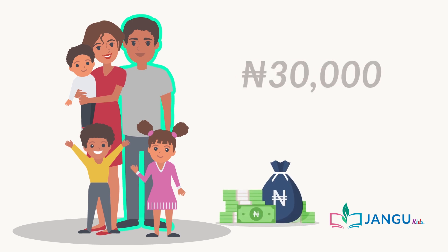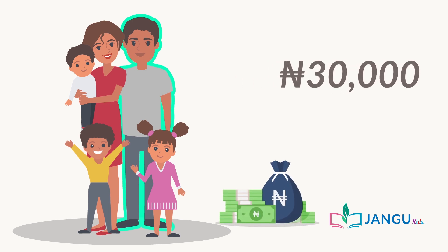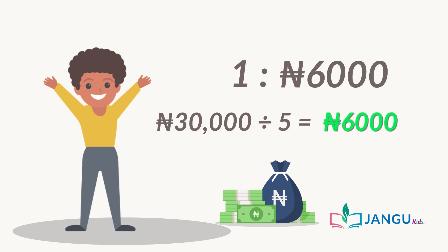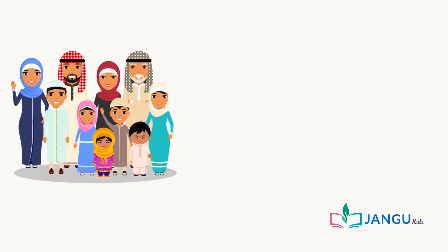For example, if Mr. Jack's salary is 30,000 naira and there are five people in his family, this means that the ratio of the family size to the resources is 5 to 30,000, which is also 1 to 6,000. This means if the family resources of 30,000 naira are shared equally among the family members, each person will get 6,000 naira.